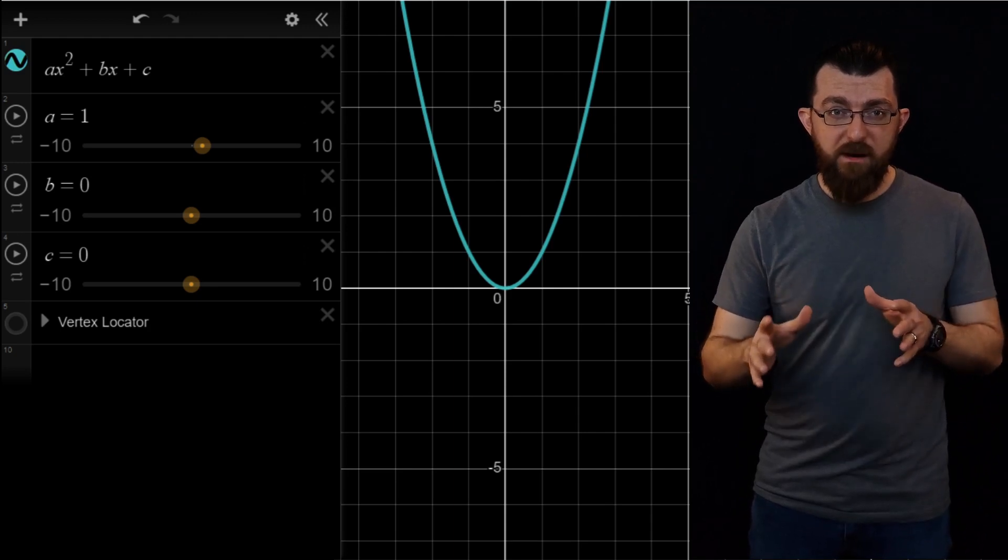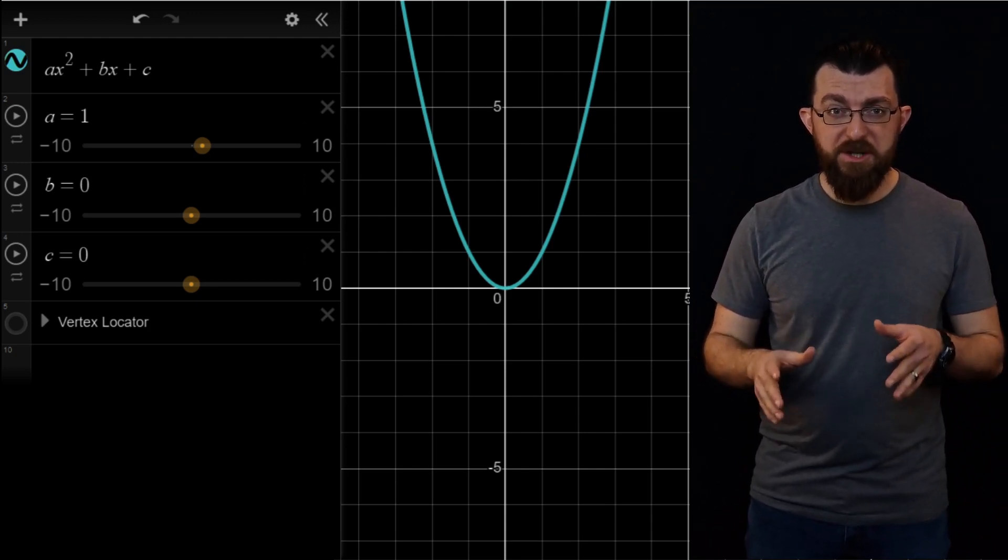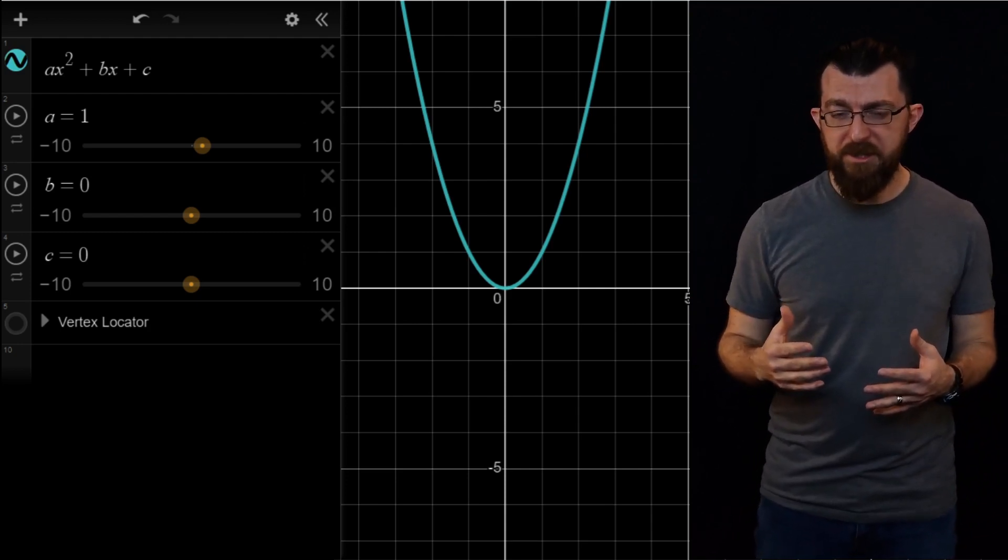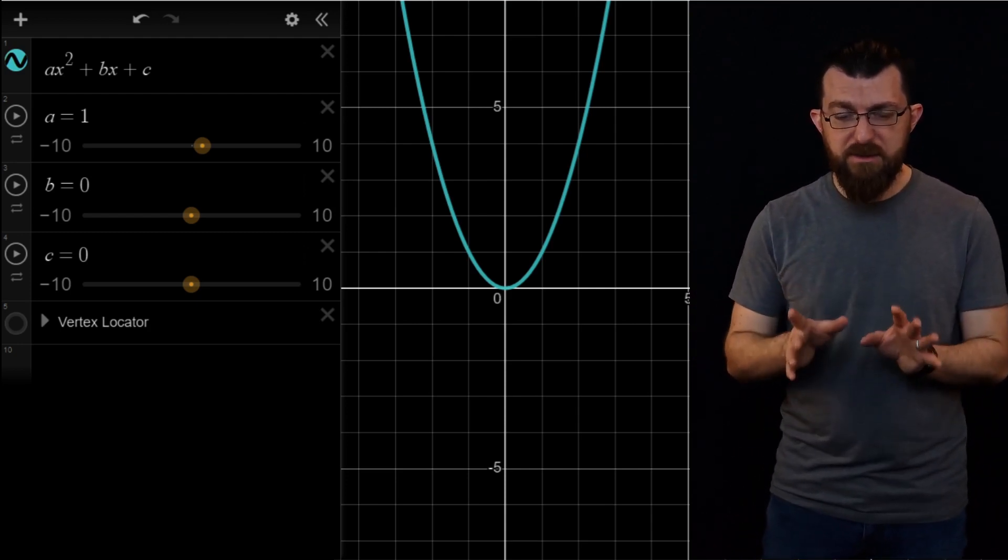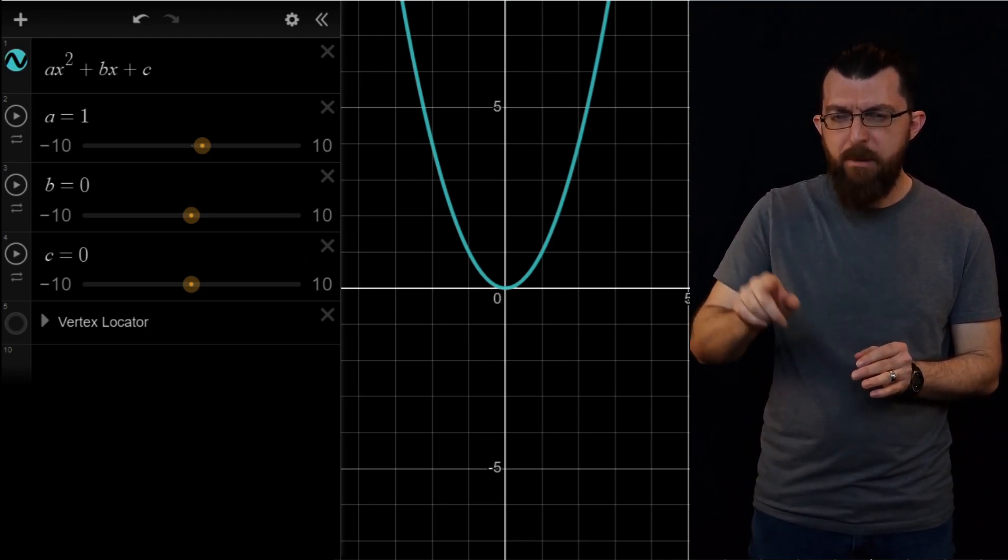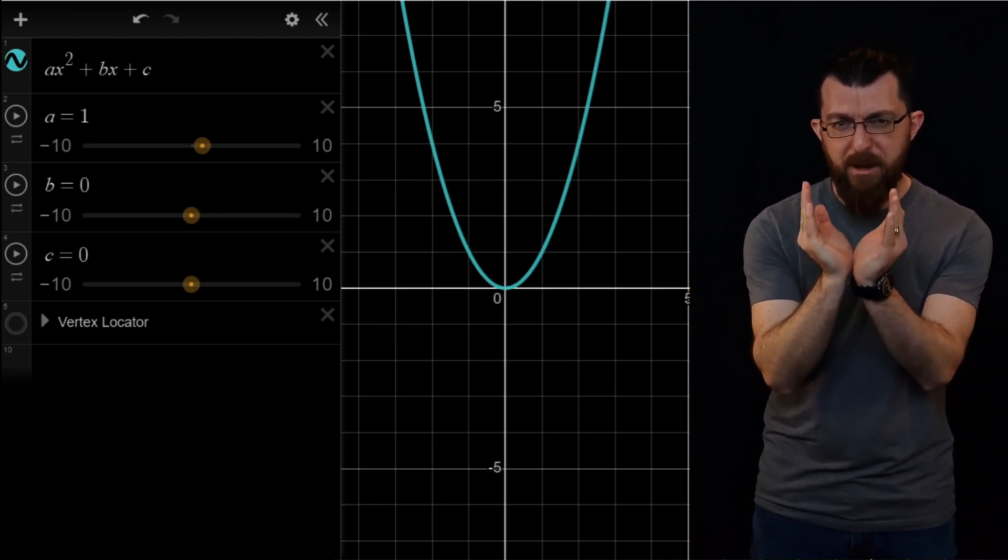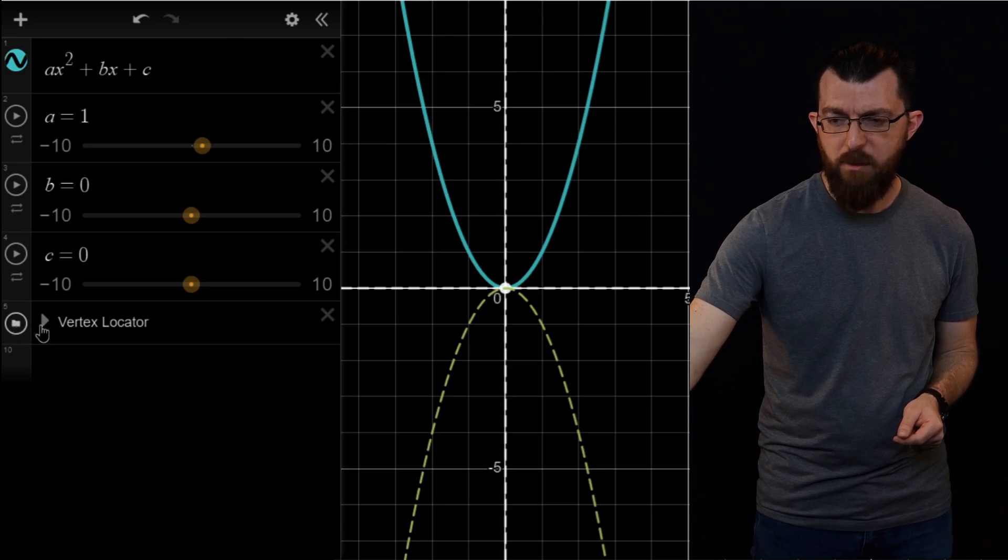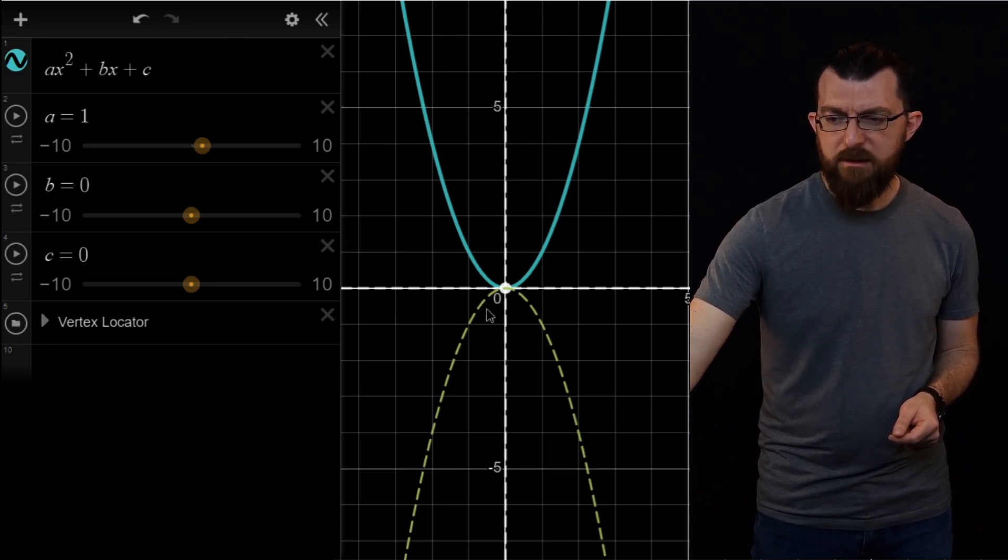So as we're trying to figure out what these sliders are doing, and we're just kind of superficially seeing the shape and position of the parabola change, it's worth digging a little deeper and trying to focus on some specifics. For example, if you look at the very bottom of the curve, like the very bottom of that U, that is an important point. Call it the vertex. And if I turn on this little vertex locator, another dotted line shows up.